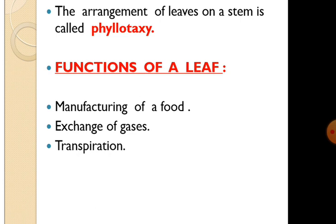Next, functions of a leaf. A leaf performs three main functions. One is the manufacturing of food, which is the primary function of a leaf. Food is prepared by the green leaves containing chlorophyll — they need carbon dioxide, water, and the presence of sunlight and chlorophyll. They prepare food in the form of glucose and release oxygen along with that.